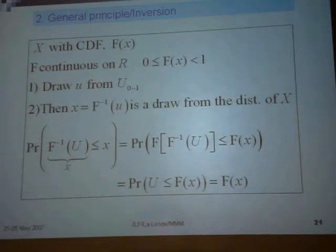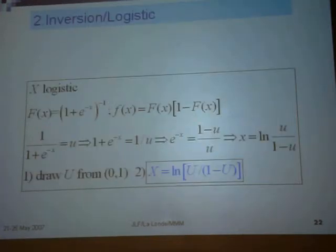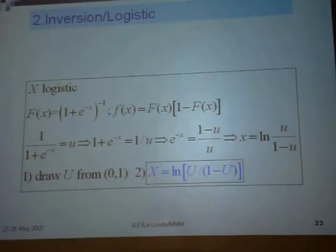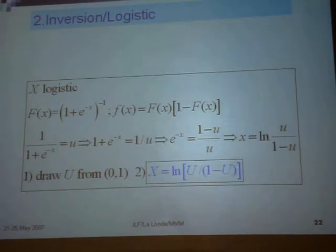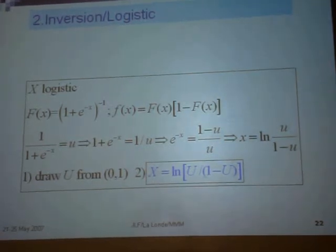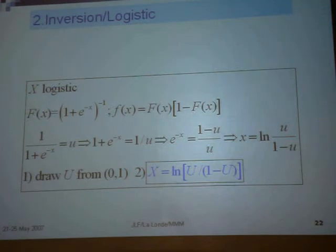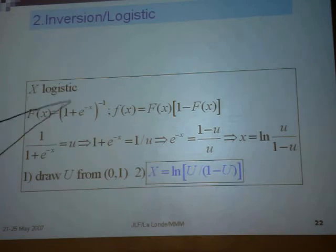We will give you a couple of examples. The first one is the logistic distribution — remember, we use the logistic with binary data or with proportion pairs. So F of x is 1 over 1 plus e to the negative x.